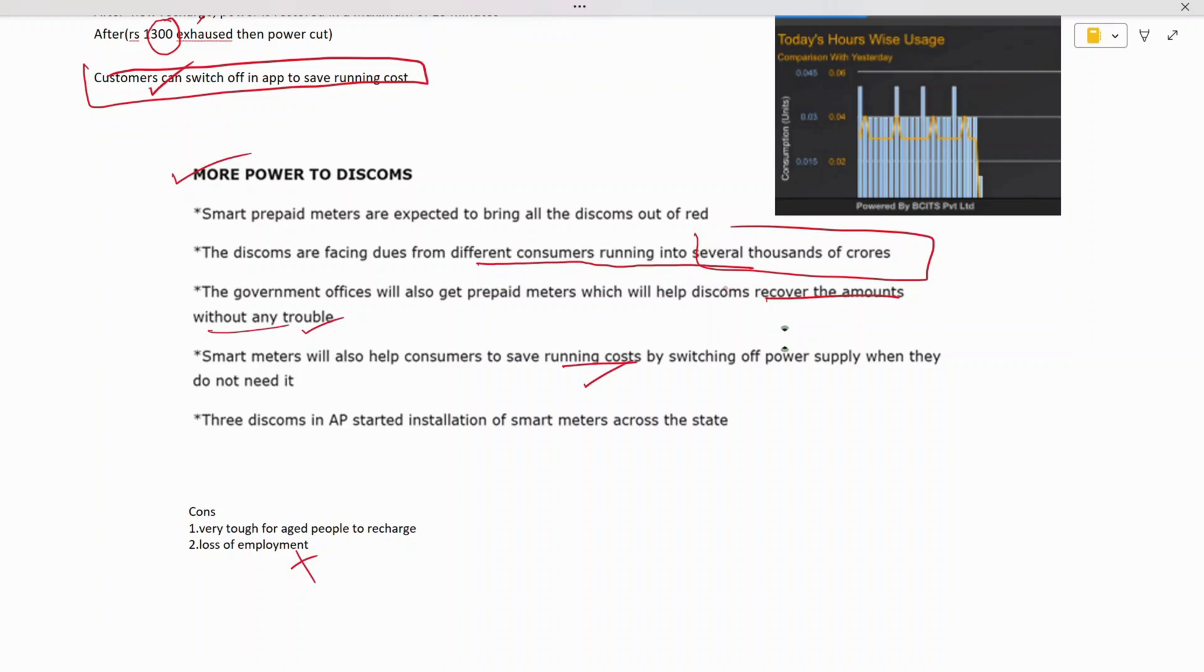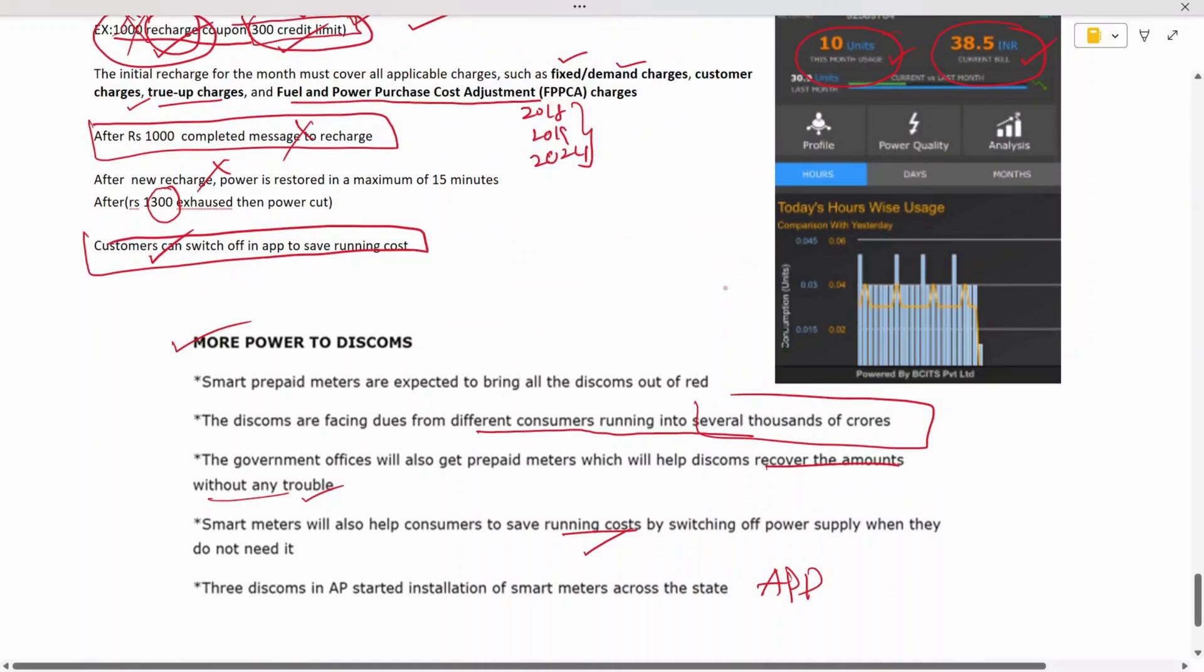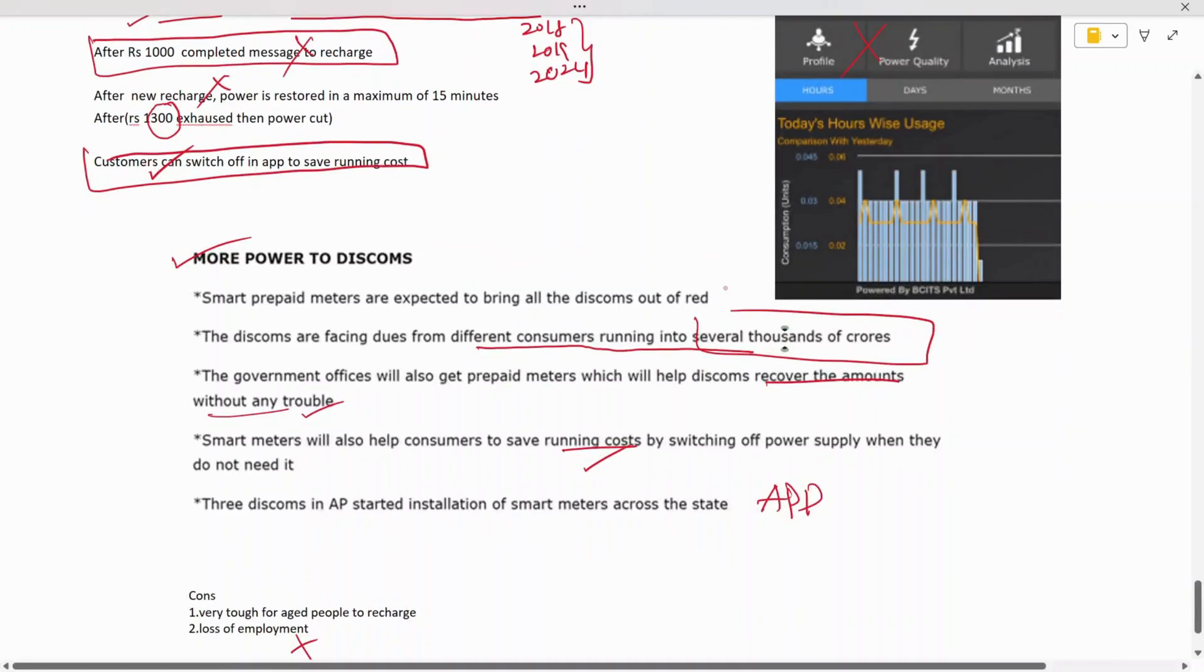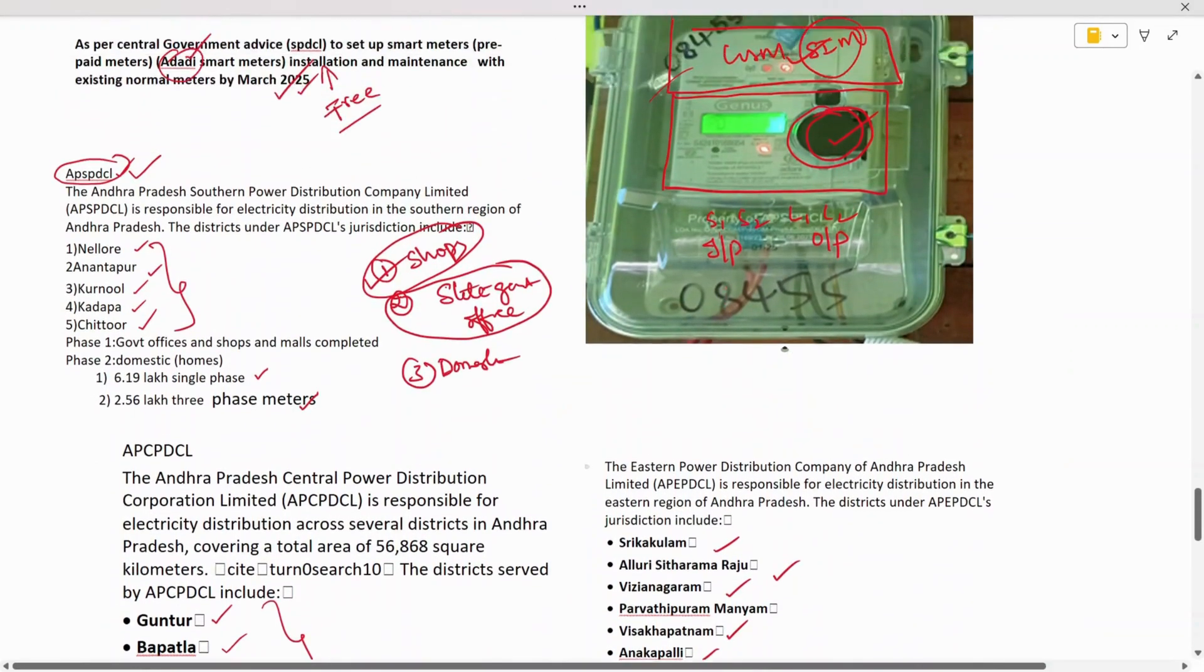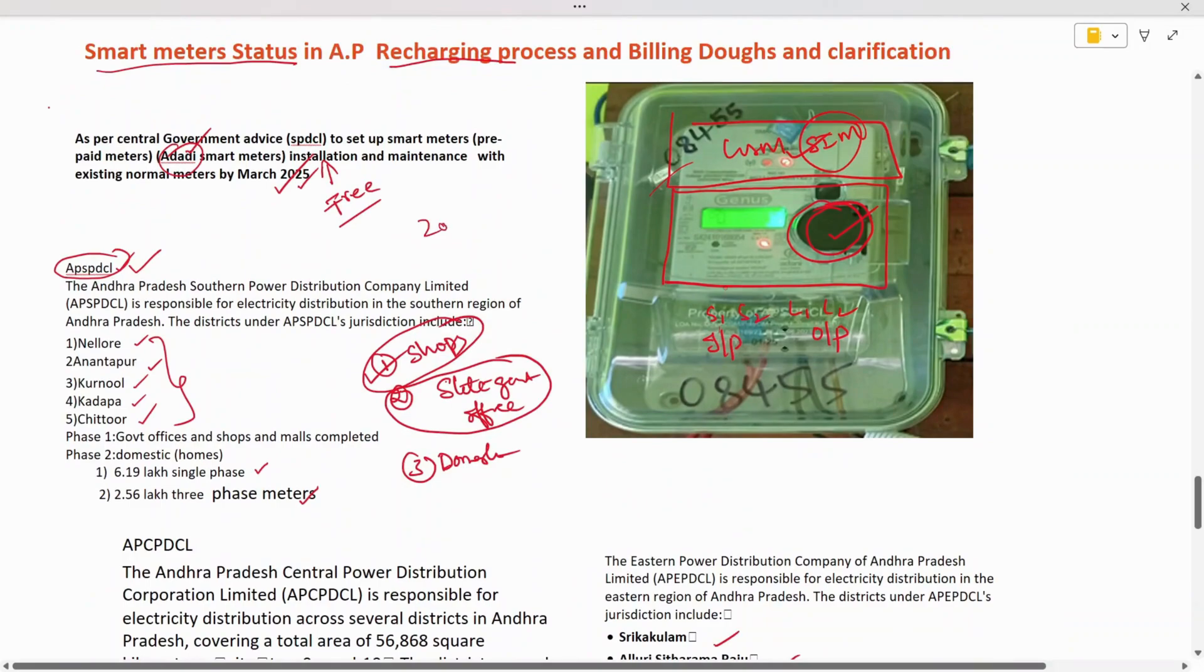How can they save running costs? Through your app, you can disconnect your power and automatically save your running costs. All this will happen by the end of 2025. All houses will be installed with smart meters, and this process will be handled by the corresponding distribution corporation through their apps.